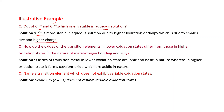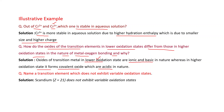How do oxides of transition elements in lower oxidation states differ from those in higher oxidation states? Oxides of transition metals in lower oxidation states are ionic and basic in nature. In lower oxidation states, there is less positive charge, so the metal can lose more electrons, which represents basic behavior.